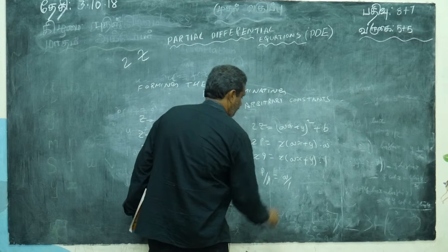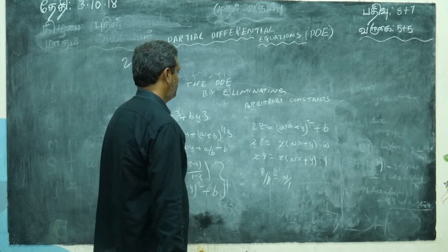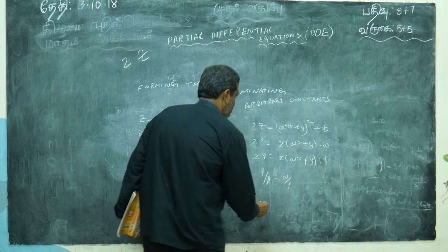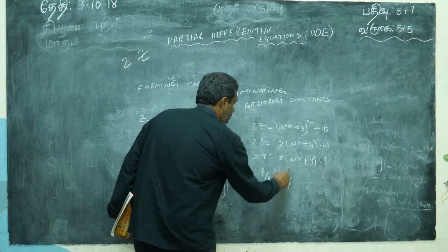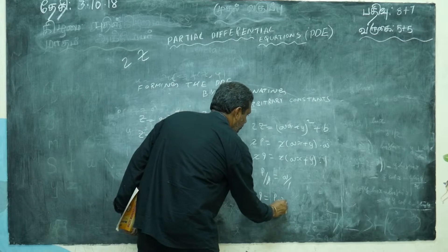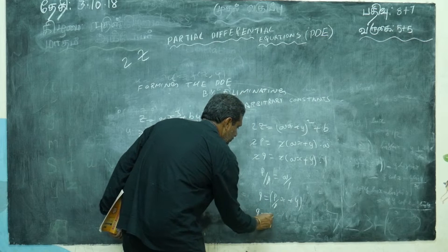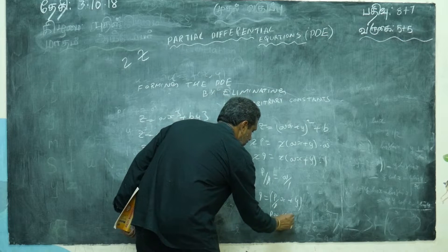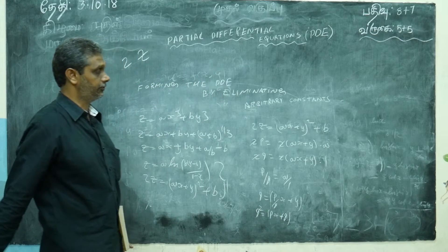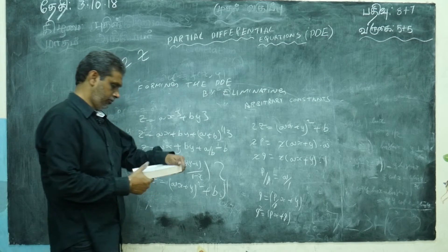So p/q = a. Substituting back: q = (ax + y)·1, and a = p/q, so the equation becomes q = (p/q)·x + y, meaning qx times something plus y gives the required PDE. That is the required answer. Similarly this approach also works for the log problem.